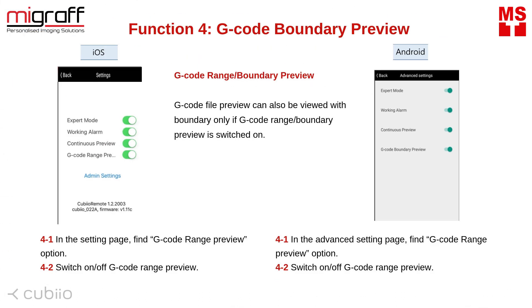Function number 4: G-code boundary preview. G-code file preview can also be viewed with boundary preview only if G-code range or boundary preview is switched on. In the setting page, find the G-code preview option and switch on or off G-code range preview.